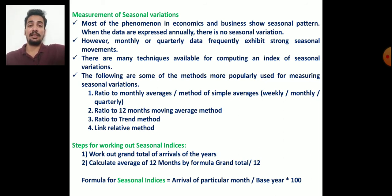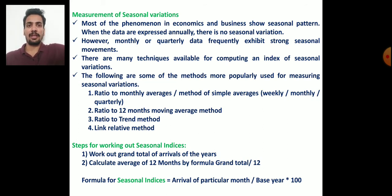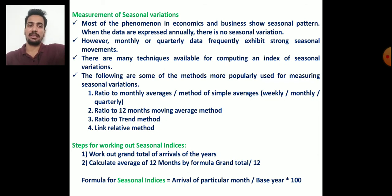The second step is to calculate the average of 12 months using the formula: grand total divided by 12. This gives you the average for that particular year. Now keep in mind the formula for calculating the seasonal indices.